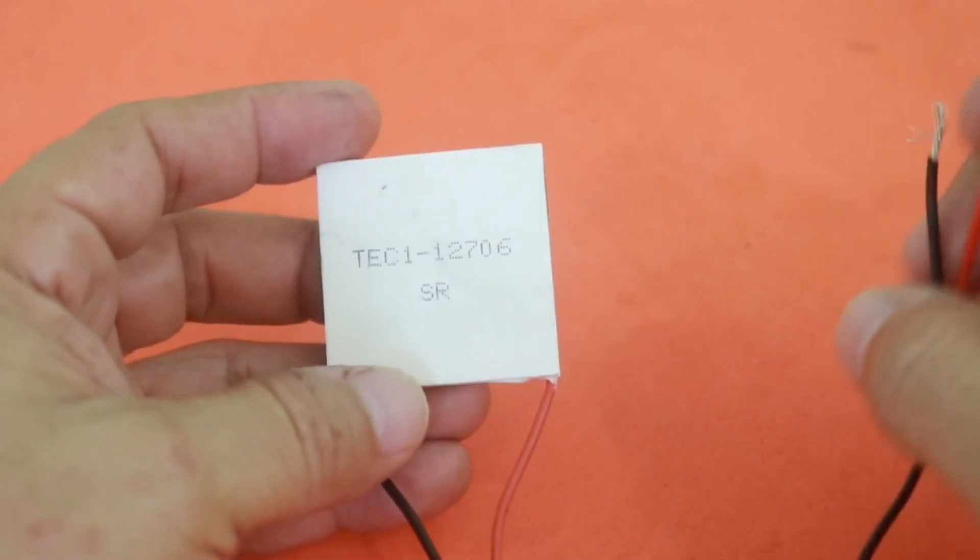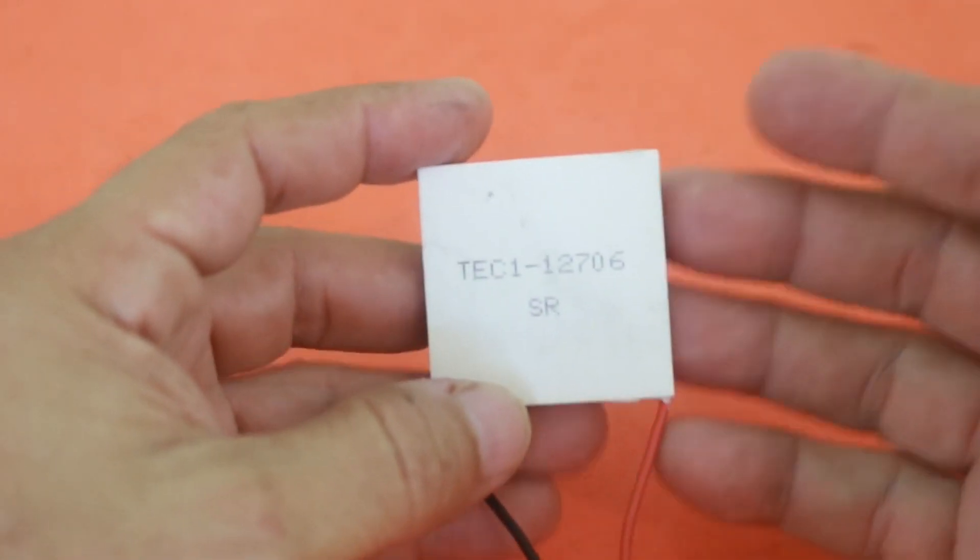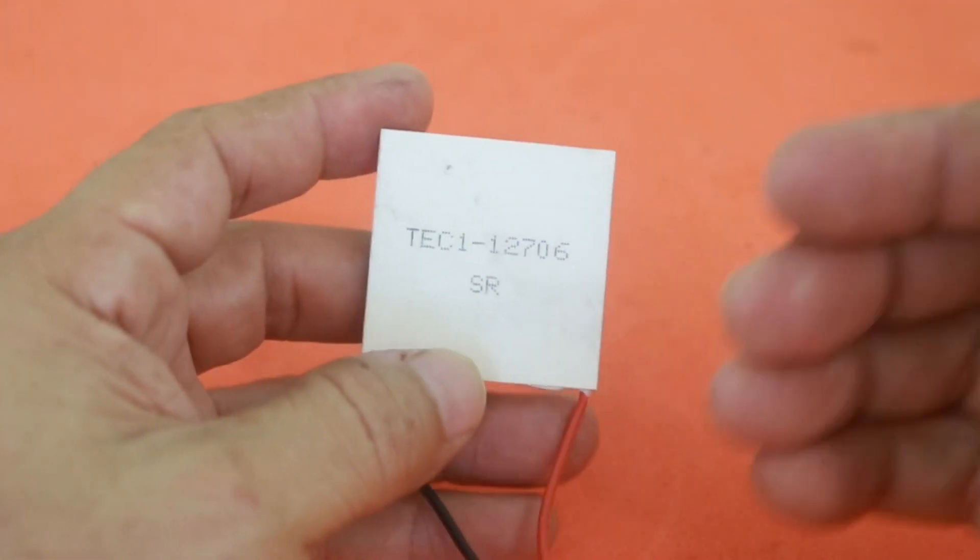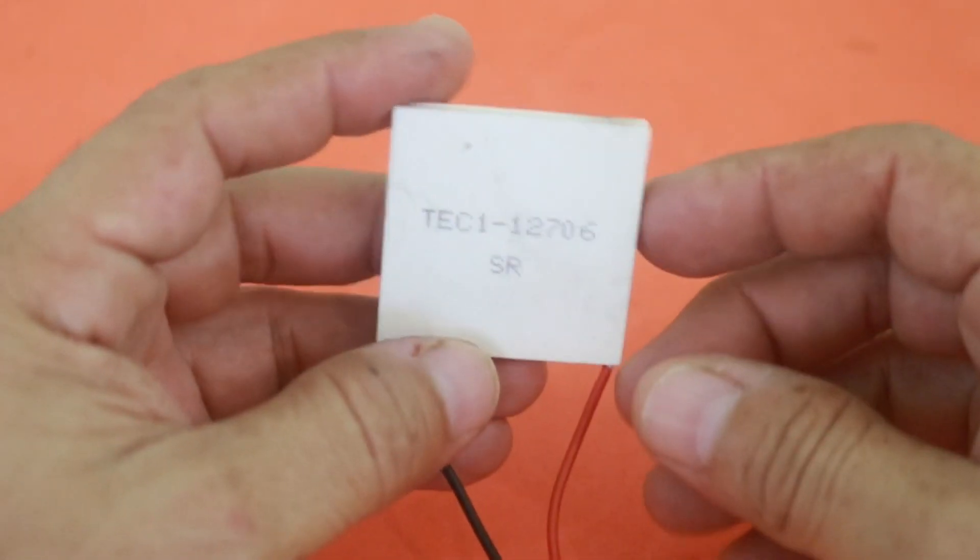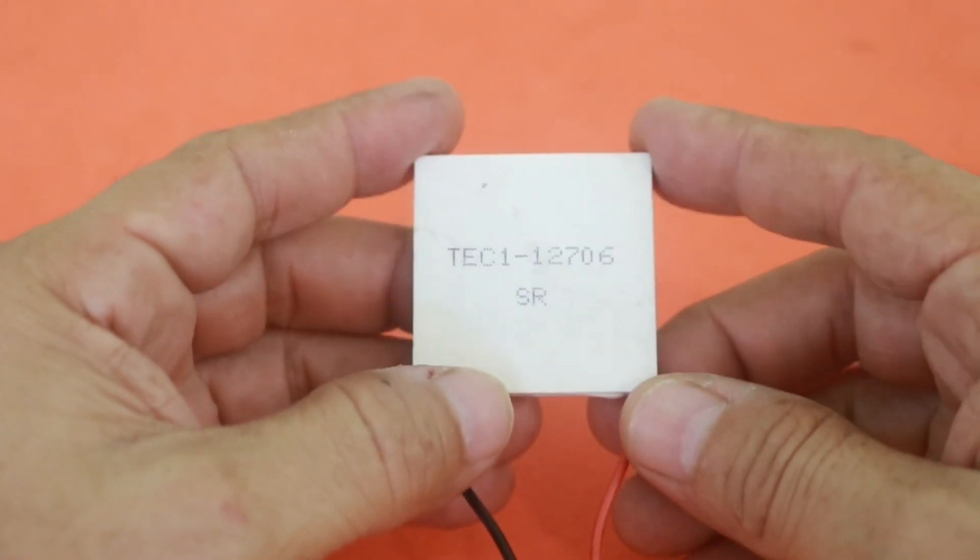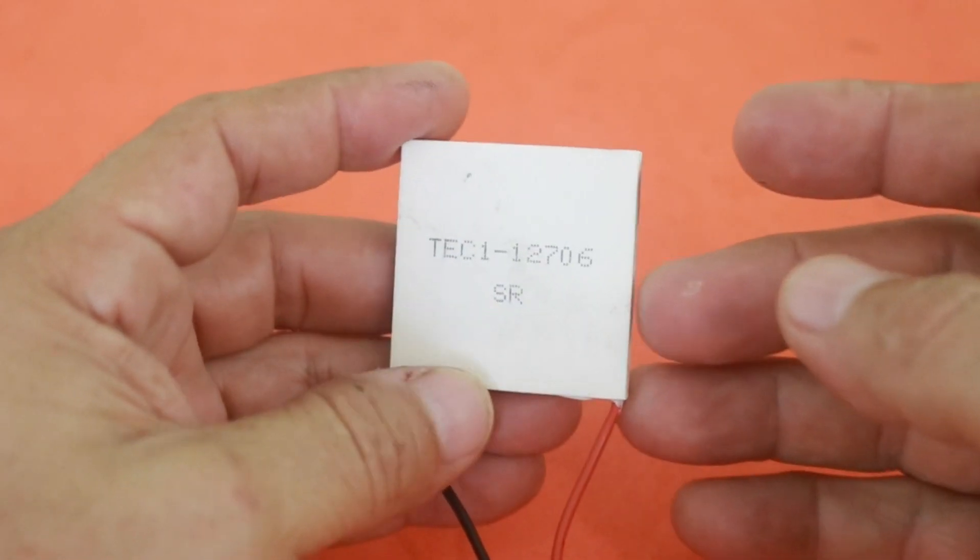You will get a current at the terminals. These cells are commonly used in small refrigerators, portable refrigerators, and also to cool electronic circuits.